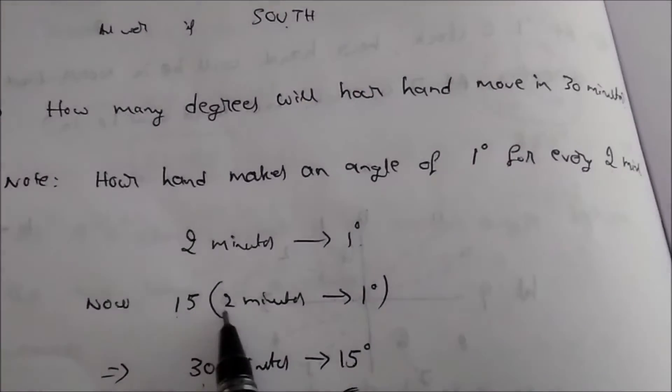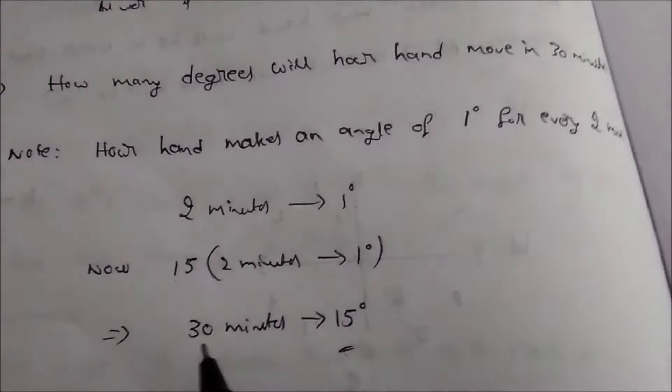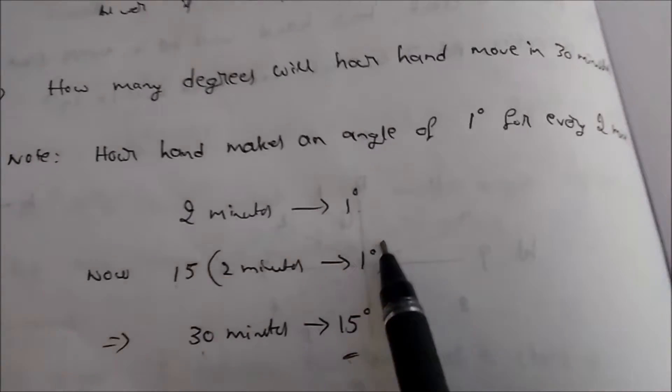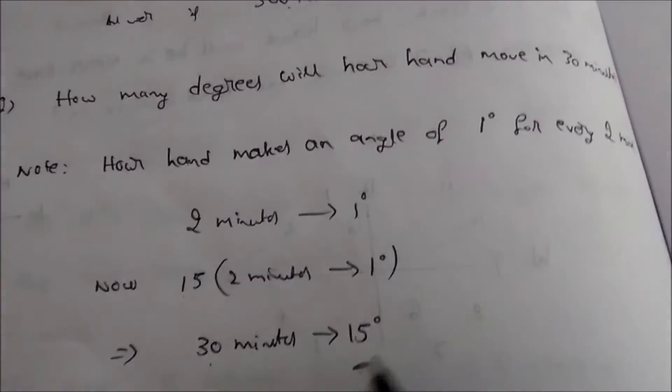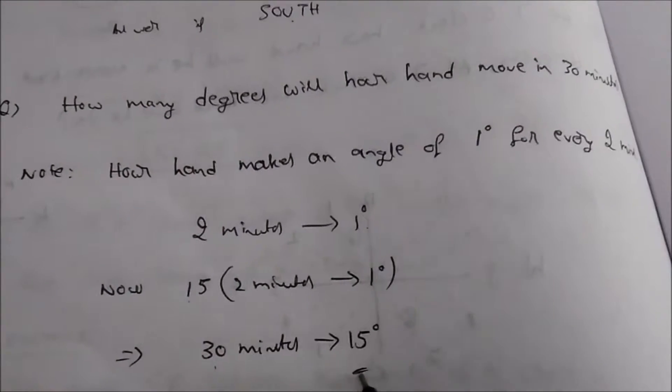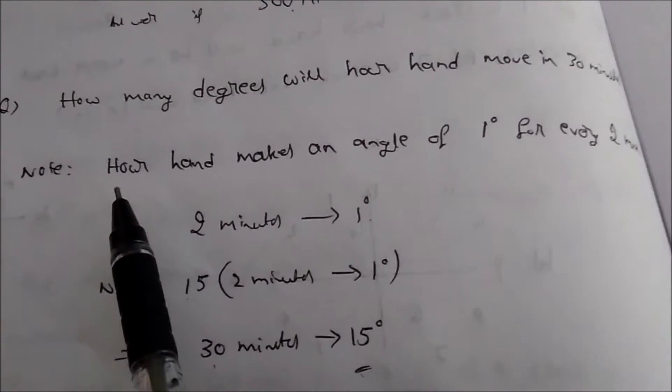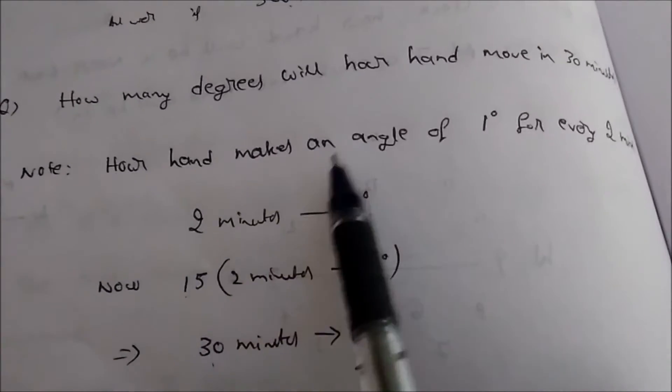Now you just multiply 15 with this value. 15 into 2 gives 30 minutes, it makes an angle of 1 into 15, which is 15 degrees. So for every 30 minutes it makes an angle of 15 degrees.